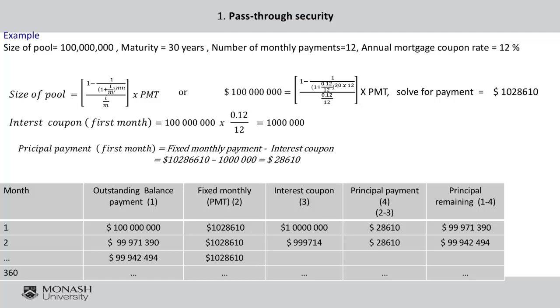So in the first month, the payment is 1,028,610 and the interest coupon is 1 million, so the principal payment is 28,610. The principal at the end of the first month is 99,971,390. This becomes the beginning balance for period 2, and we continue this table — you can use Excel to do it. You just need to understand how to calculate the monthly payments and the interest coupon. This is the basic and typical calculation for the pass-through.